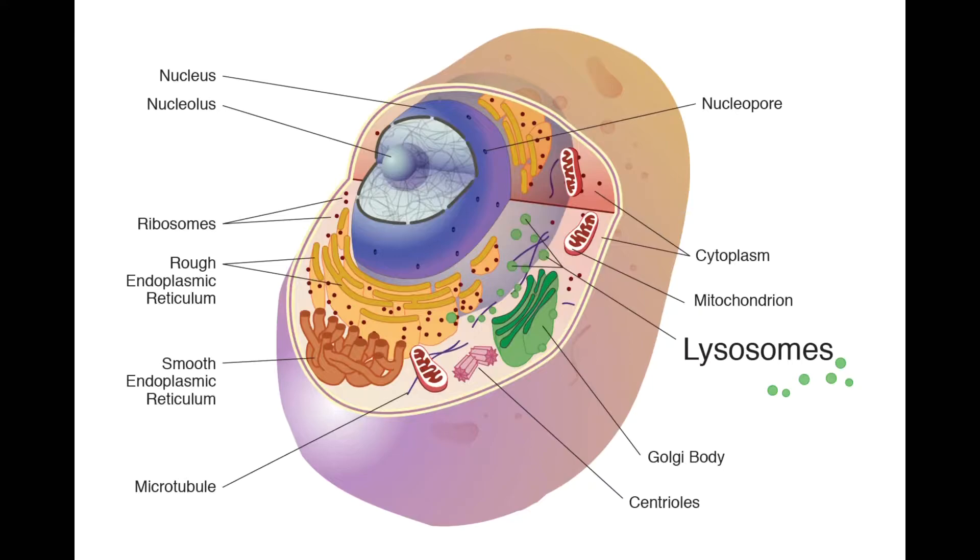Cells that produce hormones or enzymes contain a larger number of Golgi bodies than other cells. The fifth one is lysosomes. Lysosomes break down protein molecules into simpler forms so that the ribosomes and Golgi bodies can rebuild them into proteins needed by the cell.